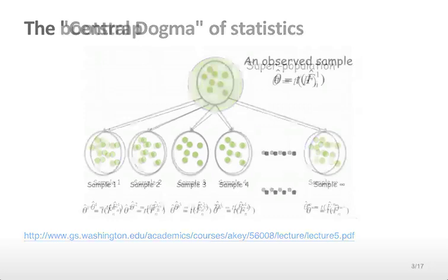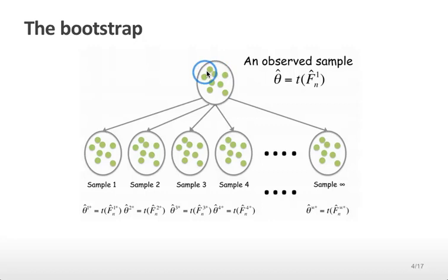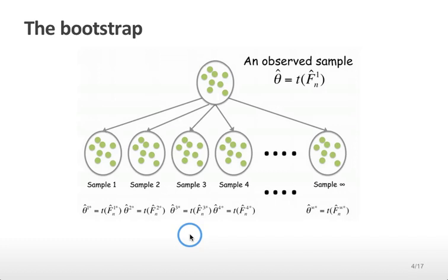The idea of the bootstrap is to take our observed sample — imagine one of those samples of 100 people from the United States — then take repeated samples from that subsample and treat each of those as if it was a brand new sample from the population. We can then recalculate our statistic, say the mean, on each of these samples, and use that to get an idea of how variable our estimate of the mean would be if we took new samples from the entire population. This seems like a tricky idea — we're just going to use the sample we observed, take subsamples of that, and use that to get information about variability in the overall sample. However, this idea is actually quite powerful and works very well.